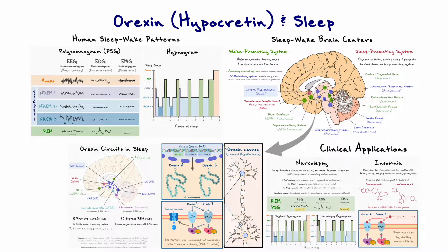Welcome to Science with Tal. In today's video, I want to cover a particular group of neurons in the brain that release a transmitter called orexin, or in some other nomenclatures hypocretin. On your screen you can see a roadmap of what we will cover, and the focus of this video will be to provide a brief overview on the influence of orexin neurons on sleep and give a few clinical applications based on the knowledge that we will accumulate.